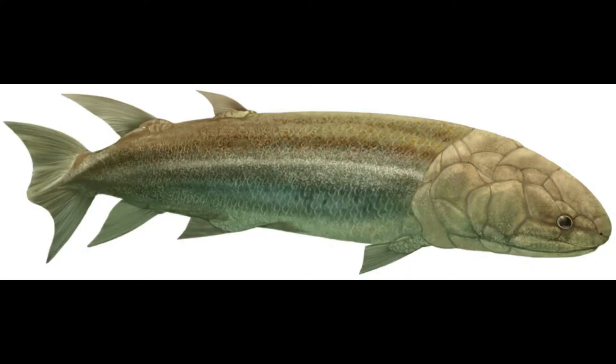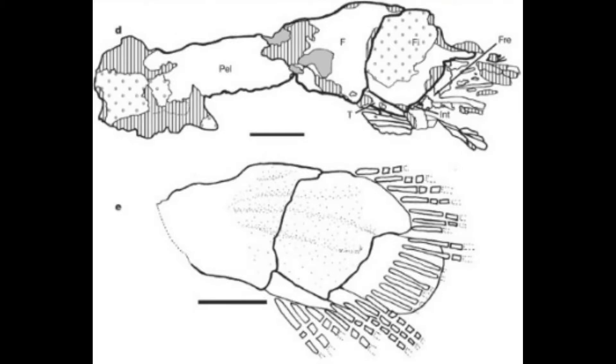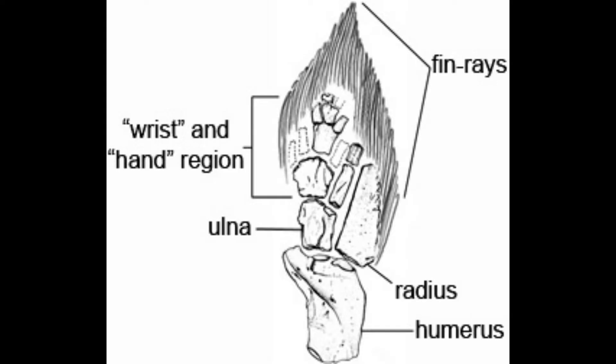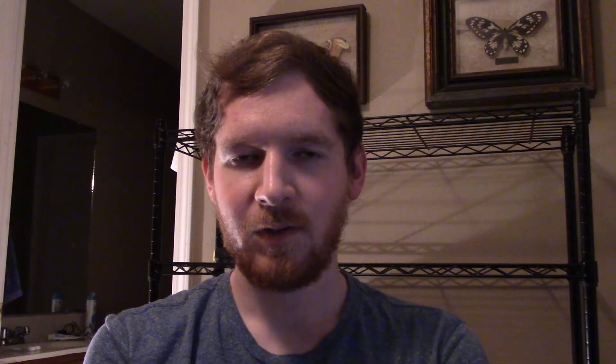Starting with lobe-finned fish to tetrapods: beginning with Eusthenopteron, then Panderichthys, then Tiktaalik — which has all of the arm bones we have in its fin — then Elpistostege, which had the beginning of digits in its fin, and then Acanthostega, which had eight digits but fully formed limbs, making it an intermediate fin-hand.